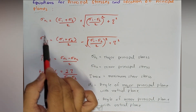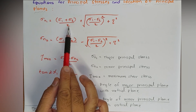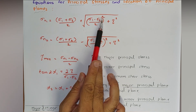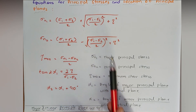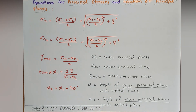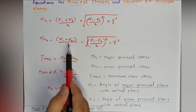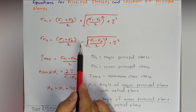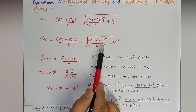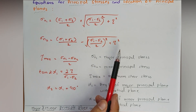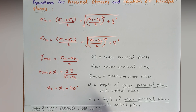Both σn1 and σn2 are calculated by these formulas: σn1 = (σ1 + σ2)/2 + √[((σ1 - σ2)/2)² + τ²], where τ is shear stress. And σn2 = (σ1 + σ2)/2 − √[((σ1 - σ2)/2)² + τ²], where the only change is the sign becoming minus. By these formulas we can calculate the principal stresses directly.